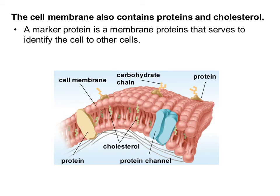The way marker proteins work is using a carbohydrate chain attached to them. You can see there are three marker proteins here, each with a carbohydrate chain attached. That carbohydrate chain is unique to each individual, so you can think of it like a fingerprint — it identifies the cell as either your own self or something else. Whenever we attach a carbohydrate to anything, we use the prefix glyco. So a marker protein can also be called a glycoprotein, meaning a protein with a carbohydrate stuck to it.